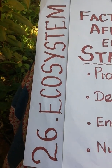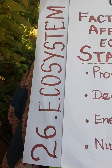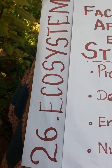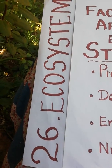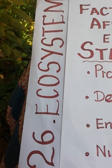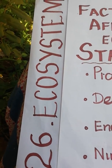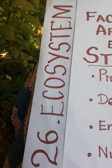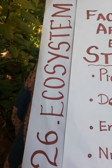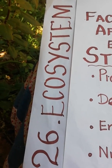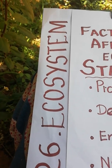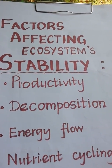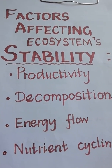Greetings children, welcome to the online classes. Today we are going to learn lesson 26, ecosystem. We are going to continue with the same lesson. Already in this lesson we discussed about the structure, function and basic components of ecosystem. Today in this class we are going to learn factors affecting the stability of ecosystem.